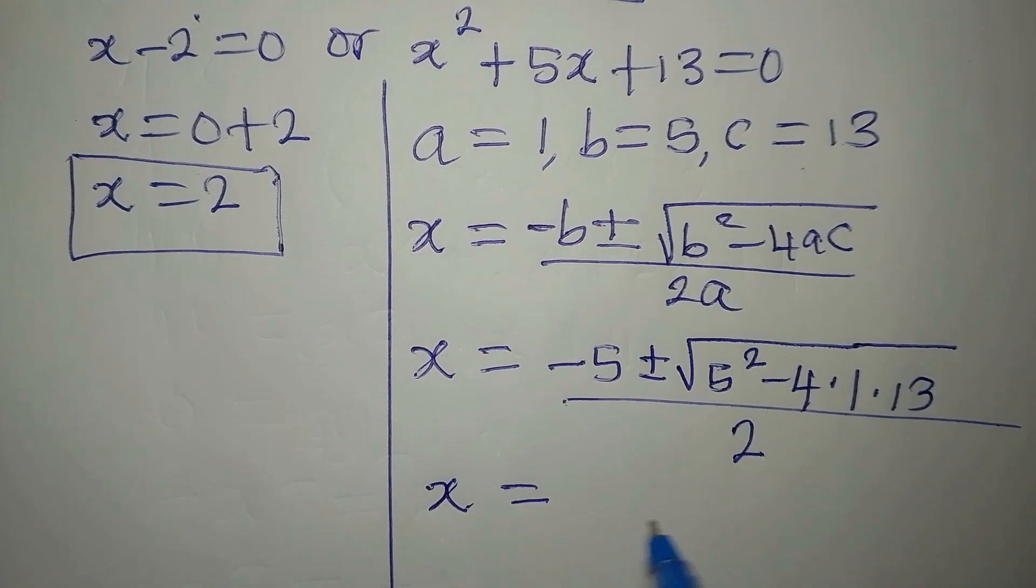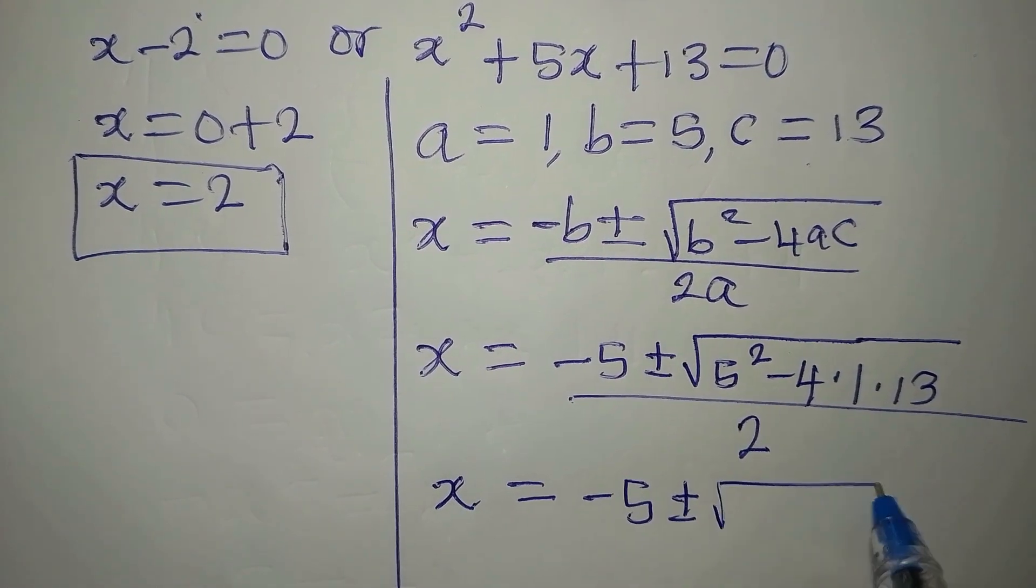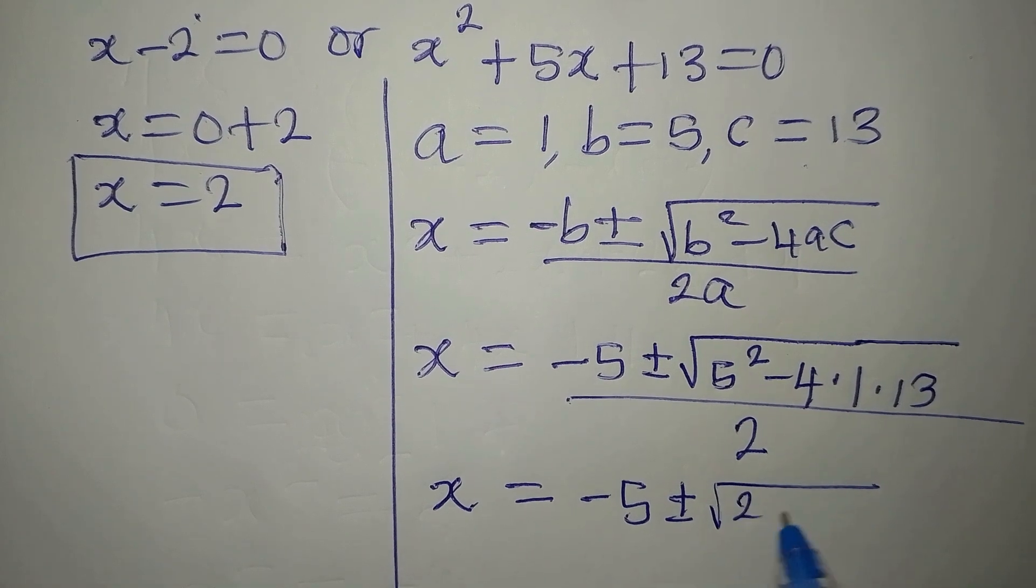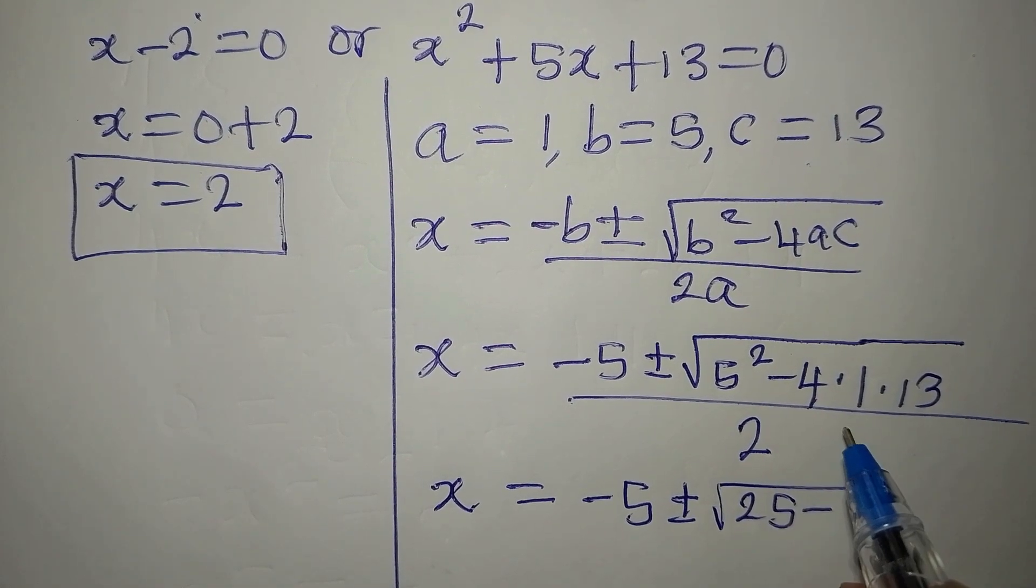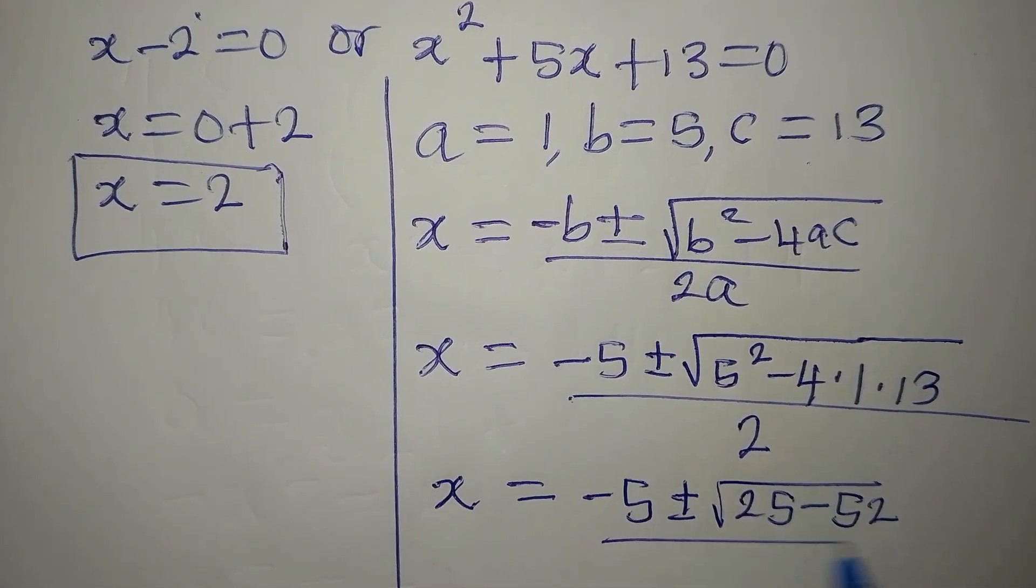X will now be equal to minus 5 plus or minus square root of 25 minus 52, divided by 2.